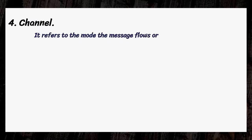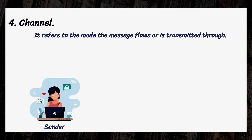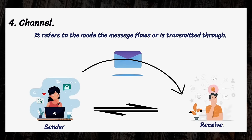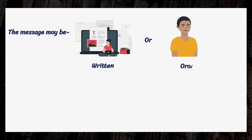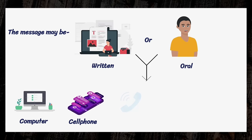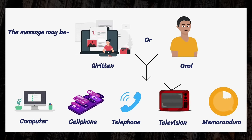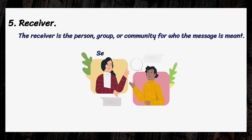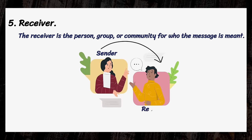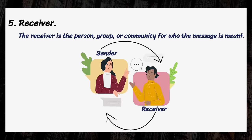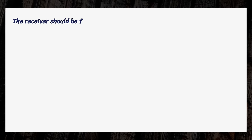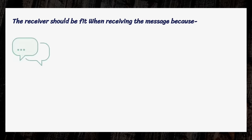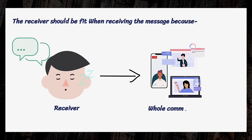The channel refers to the mode through which the message flows or is transmitted. The message is transmitted over a channel that links the receiver with the sender. The message may be written or oral, and it can be transmitted through a computer, a cell phone, telephone, television, or a memorandum. The receiver is the person, group, or community for whom the message is meant. The receiver is also an important factor in the communication process, and should be in a fit condition when receiving the message, as any negligence may make the communication useless.